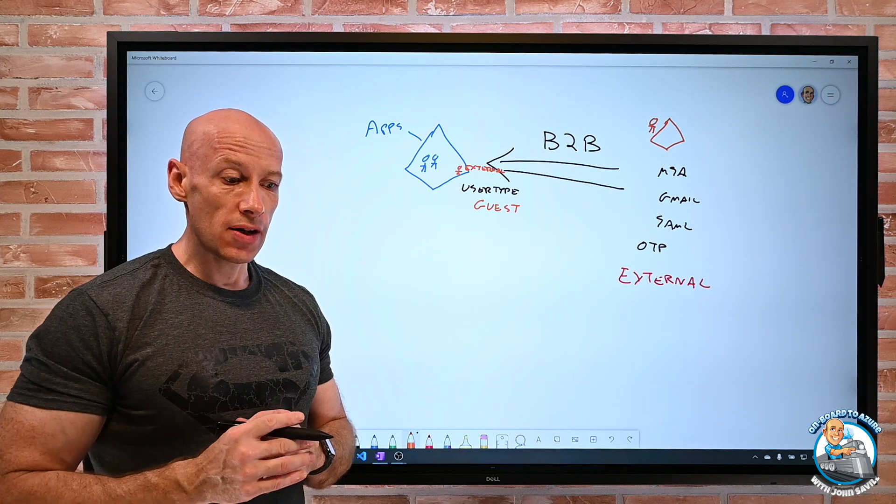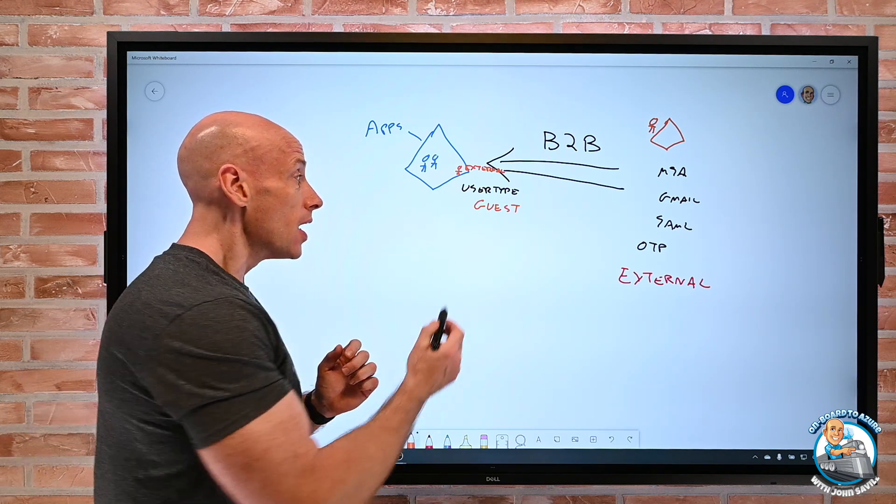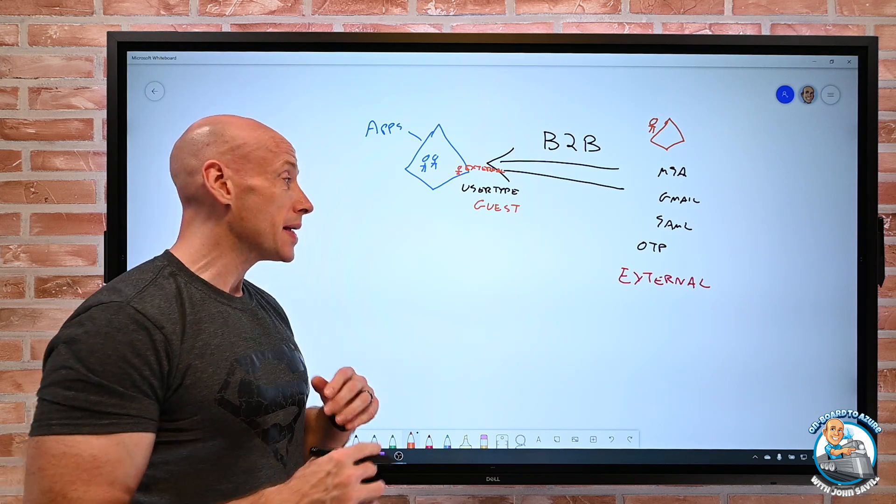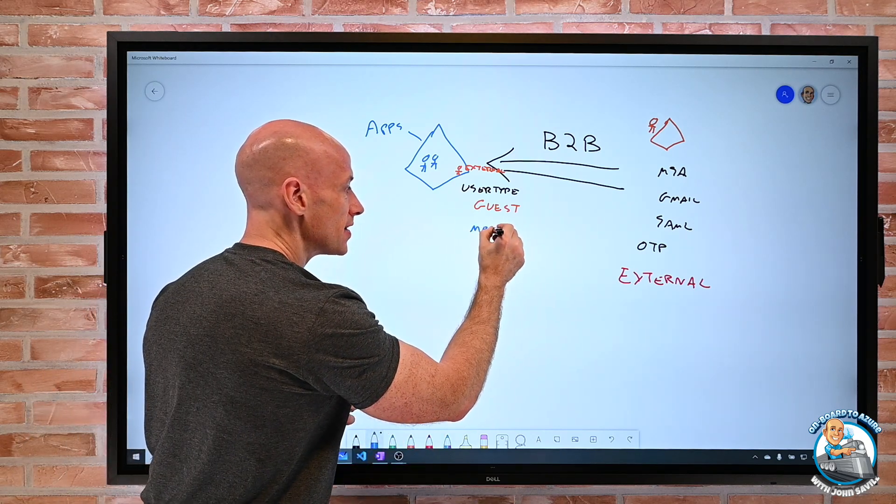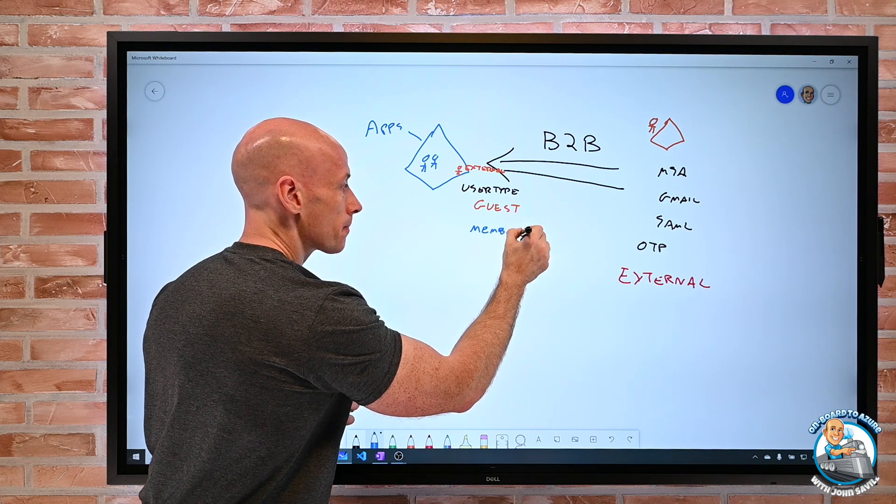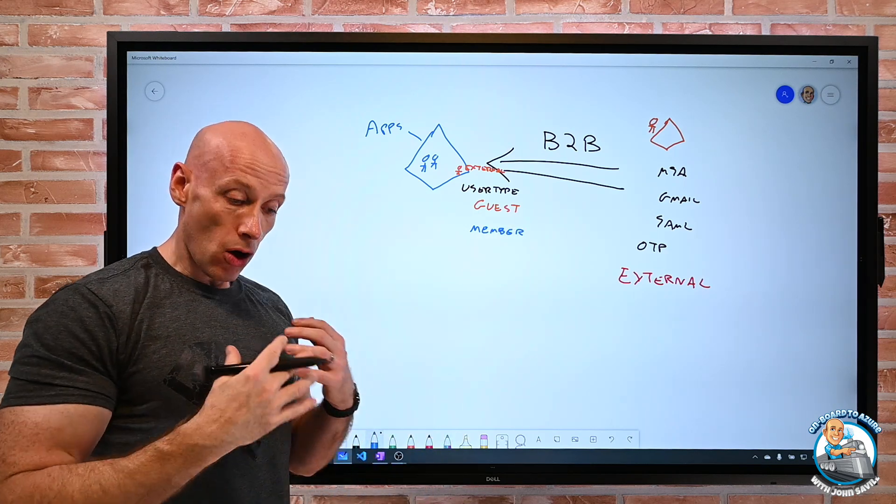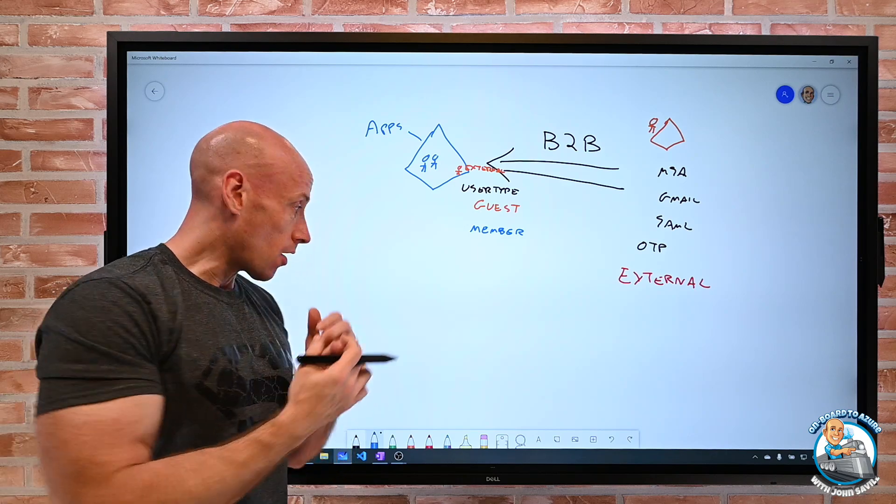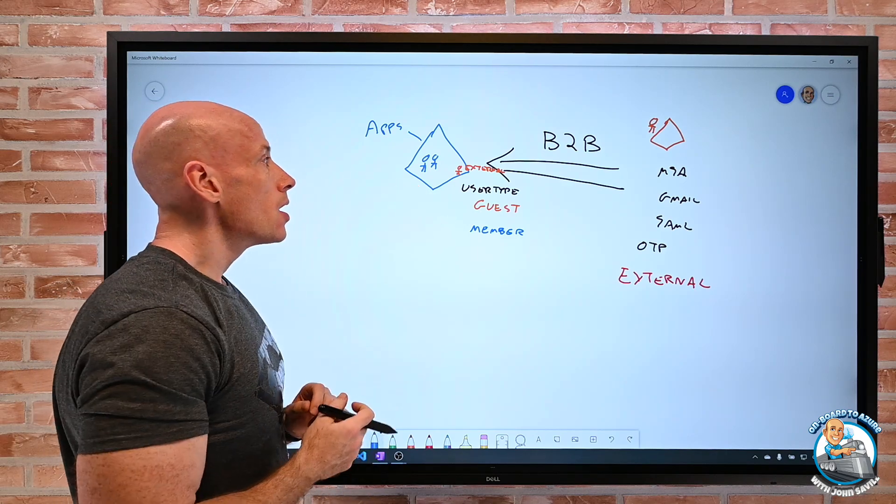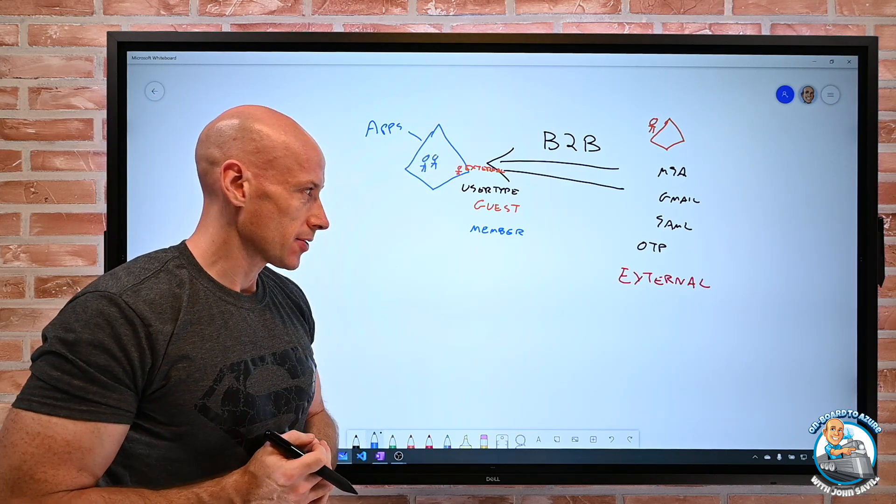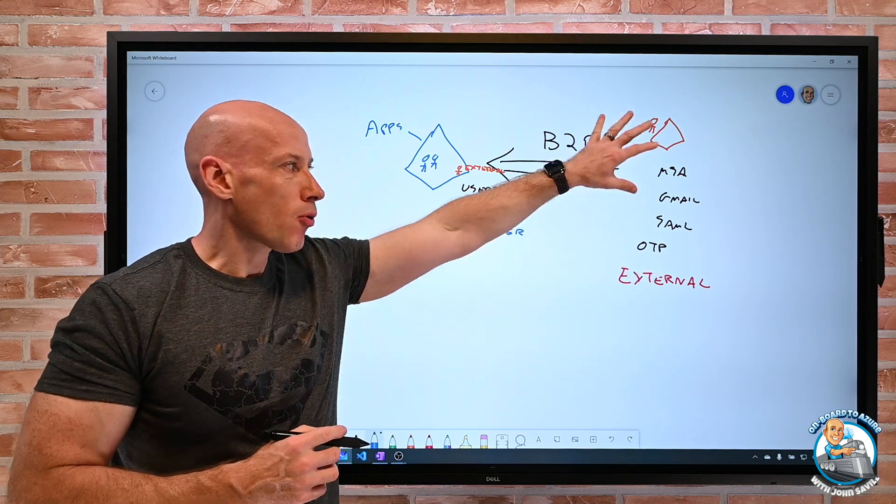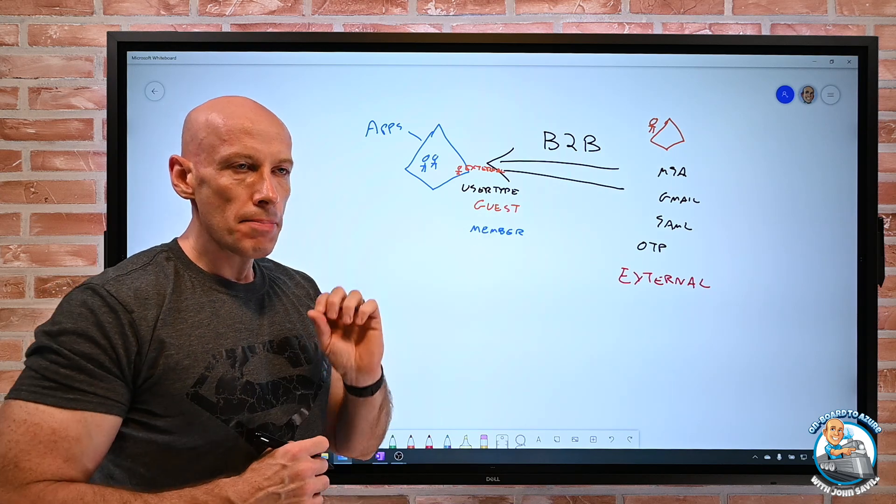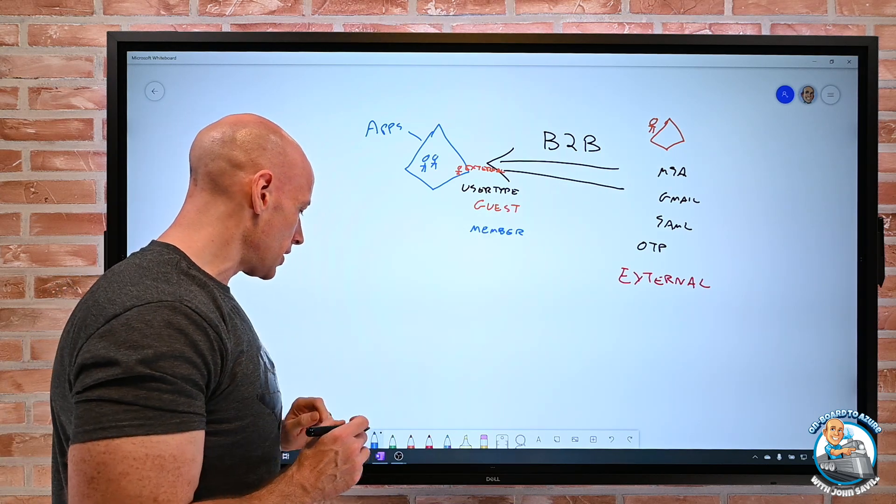I can change the user type to be member. So member is what we often see for people that are actually part of our Azure AD tenant. They are replicated from AD. They were created as cloud accounts. And why this is important is we want to collaborate with these people. And most of the time we want those external sources.